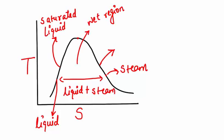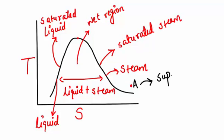The liquid-vapor mixture is called the wet region, and this represents saturated steam. If point A is outside this dome, then steam at this state is called superheated steam.